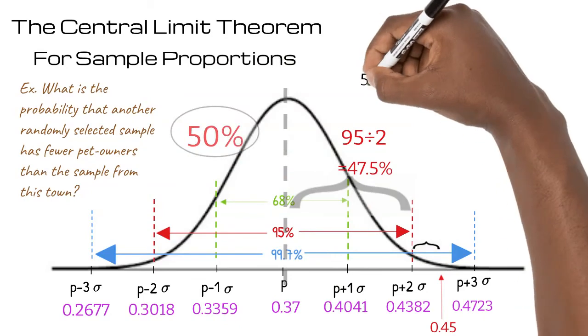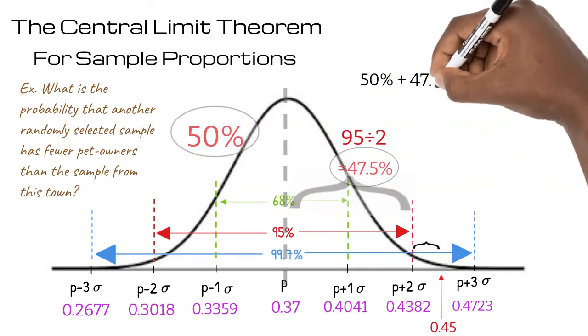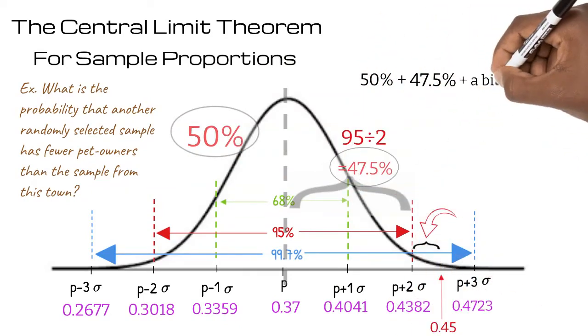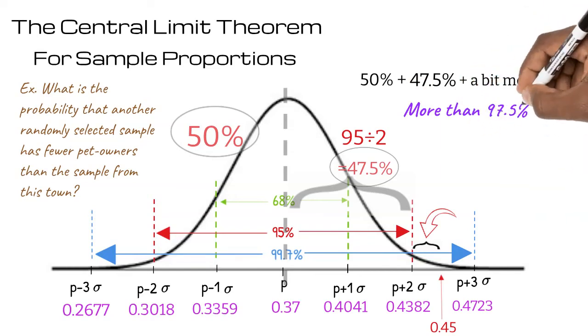50% plus 47.5% plus a bit more tells us that more than 97.5% of samples selected will have a smaller portion of pet owners. To get the exact probability we can use a z-score table or a statistics calculator.